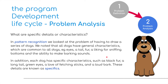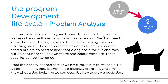Let me give an example — a dog. In pattern recognition we're looking at the problem of having to draw a series of dogs. We noted that all dogs have general characteristics which are common to all dogs, e.g. they have eyes, a tail, fur, a liking for sniffing other dogs' bottoms and the ability to make barking sounds. In addition, each dog has specific characteristics such as black fur, a long tail, green eyes, a love of fetching sticks, a loud bark. These details are known as specifics. In order to draw a basic dog, we do need to know that it has eyes, a tail and fur because these characteristics are relevant. We don't need to know what sound a dog makes or that it likes chasing cars and retrieving sticks — these characteristics are irrelevant and can be filtered out.